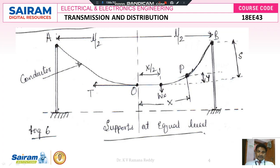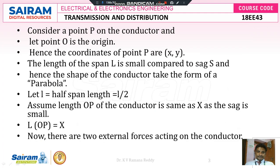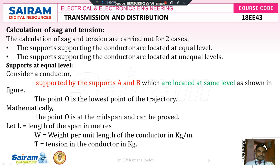Between terminal A and terminal B, or tower A to tower B, the total length is L. If it is divided into two equal parts: from A to O it is L/2, and from O to B it is again L/2. Therefore, L is equal to the total span of the conductor in meters.